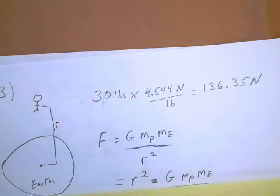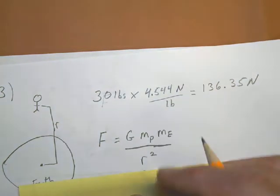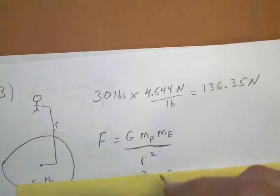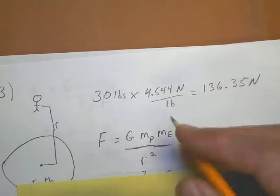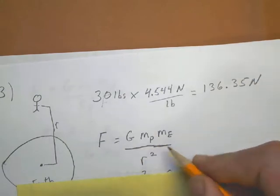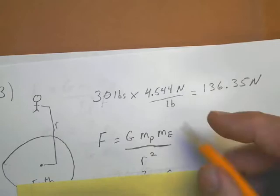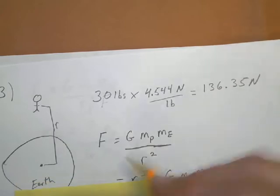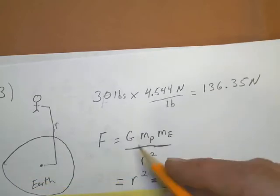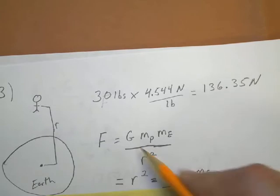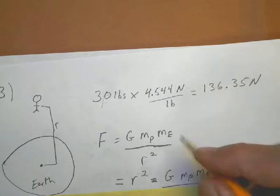Again, you set up your equation, and it really helps to do this first all the time. Set up the equation straight, put little subscripts on it so you know what masses you're dealing with. In this case, the force is equal to G times the mass of Pete, times the mass of the earth, divided by the radius squared, or the distance between the center of the earth and Pete somewhere in space.